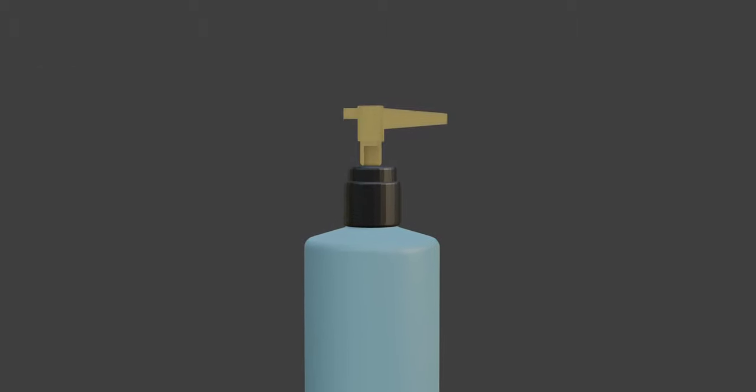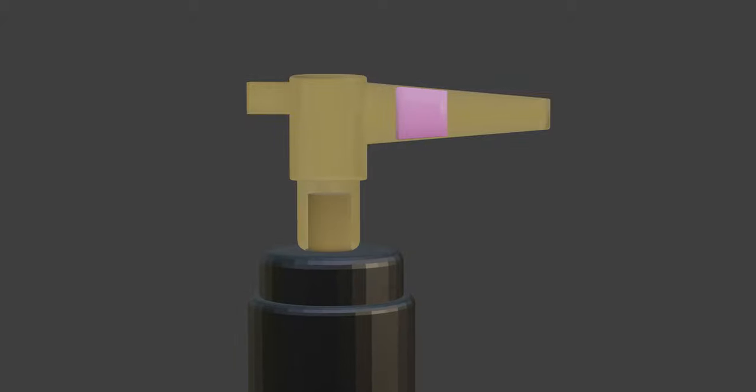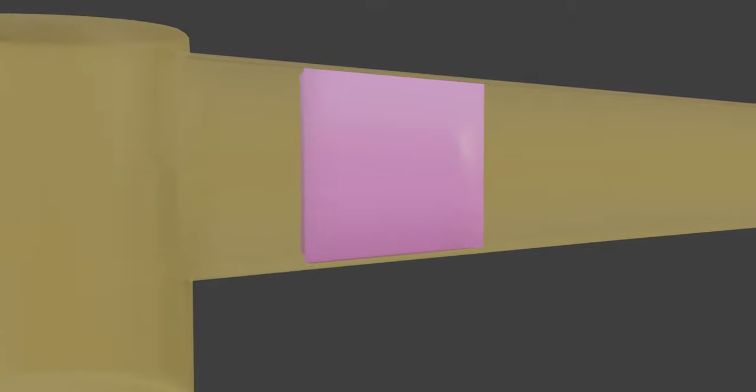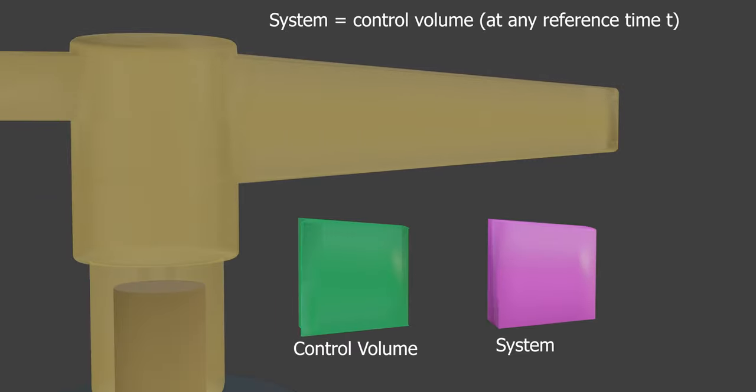Now, consider flow from left to right through this converging nozzle. When the liquid flows, we isolate this nozzle and draw the system and control volume boundary. Green one is control volume and pink one is the system. So at this instant, the system coincides with the control volume.